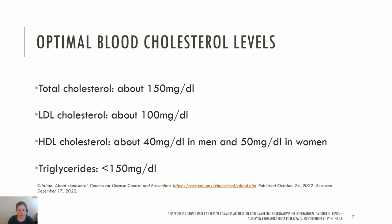A lipid panel is a standard blood test that can provide information about risk of developing cardiovascular disease. The only way to know if you have high cholesterol would be with a blood test. When looking at blood cholesterol levels, greater than 200 milligrams per deciliter indicates high cholesterol. Optimal total cholesterol would be about 150. For LDL, or the bad cholesterol, optimal is about 100. For HDL, optimal would be about 40 in men and 50 in women. Optimal triglycerides would be less than 150.